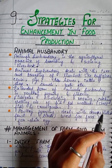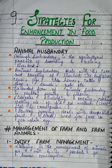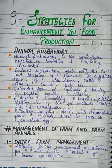An extended form of animal husbandry includes poultry farming and fisheries. Fisheries include rearing, catching, and selling of fish, mollusks, shellfish, and crustaceans. In fisheries we rear fish and sell them.